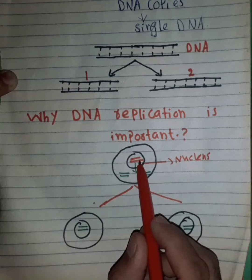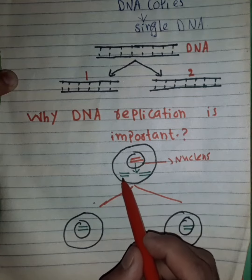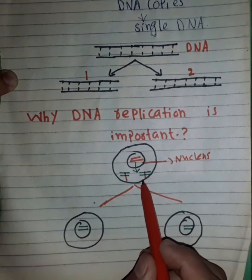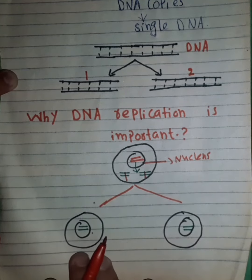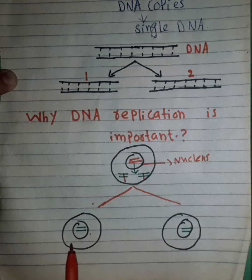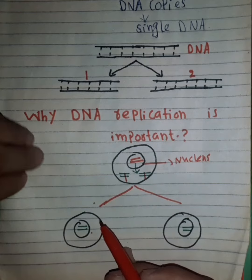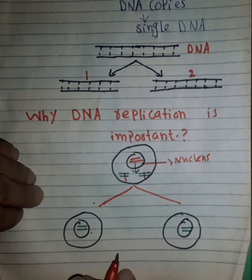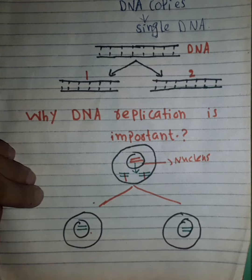First of all, we need to divide 2 cells. Our cell DNA needs to divide. DNA replication — the key is that when the cell divides, daughter cells are formed. Our daughter cells' DNA — DNA replication makes the double. We'll discuss prokaryotic and eukaryotic DNA replication parts.